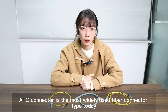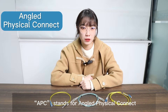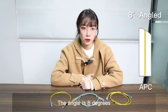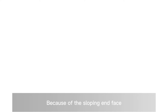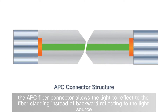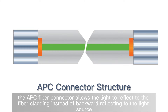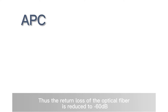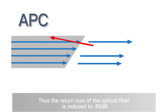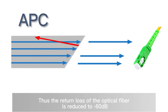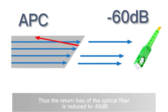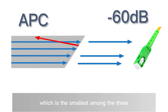APC connector is the most widely used fiber connector type today. APC stands for Angle Physical Contact. The angle is 8 degrees. Because of the angled end face, the APC fiber connector allows light to reflect to the fiber cladding instead of reflecting backward to the light source. Thus, the return loss of the optical fiber is reduced to minus 50 decibels, which is the smallest among the three.